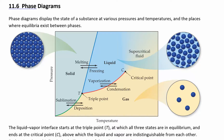Phase diagrams. A phase diagram basically looks at what phase of matter any given substance is in at certain temperatures and pressures. You can map this out with pressure versus temperature, and you can determine this experimentally.